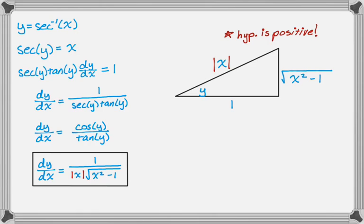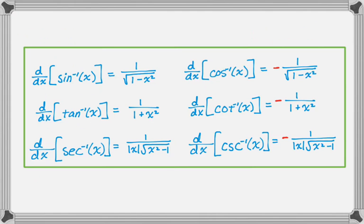On this next page I've written down all of the derivatives, so you can screenshot that. The key things to remember: the derivatives of all the co-functions are the negative of their corresponding non-co-function derivatives. The derivative of inverse sine and the derivative of inverse tangent come up all the time, so you definitely need those memorized. I think you should memorize all of these. I hope you found this helpful, and good luck.